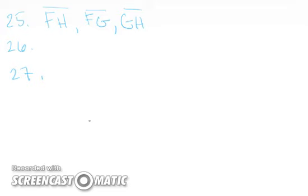Like I said, 25, FH, FG, GH are segments in order. We basically just had to set up all those angles, set them equal to 180, find out what X is, plug it back in, and then figure out which one's across from each other.